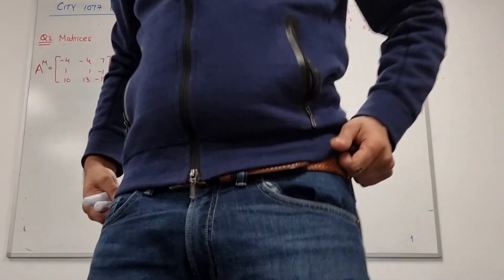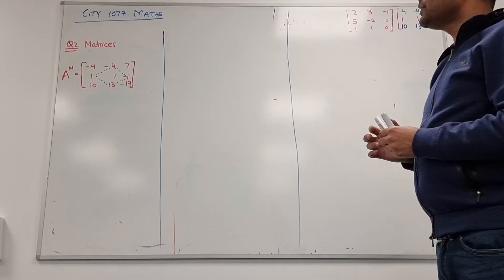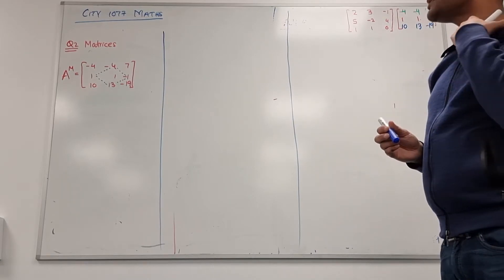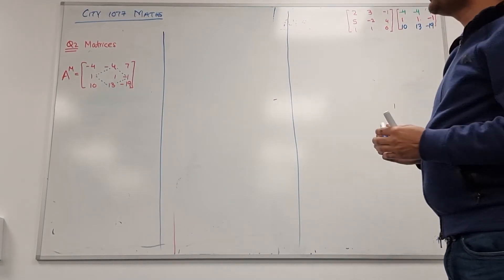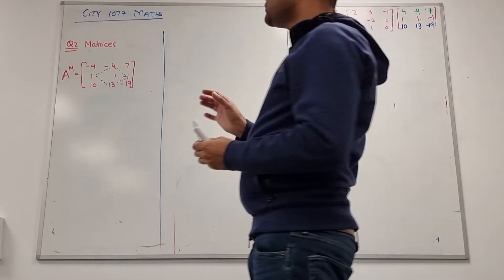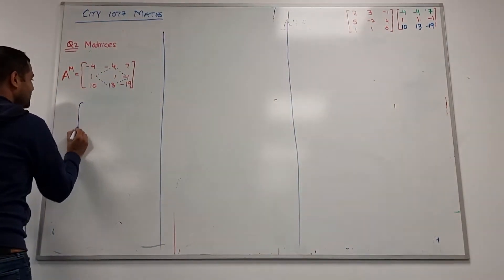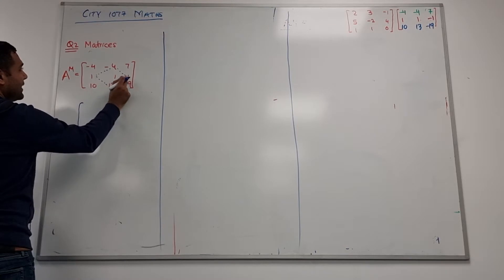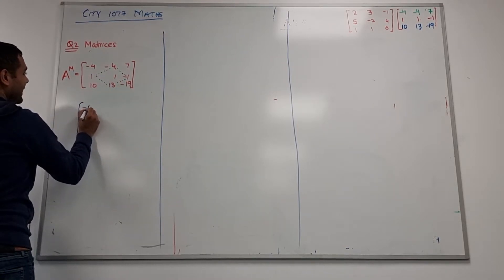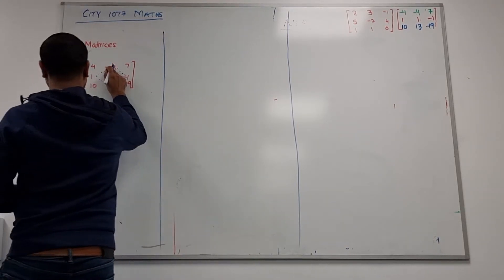So when we got the matrix, the minor of the matrix, what we need to do is we need to change some signs. Usually what I do is I draw a diamond like that one. So minus 4 as it is, this minus 4 I have to change the sign where the diamond is touching. We have to change the sign, so that becomes a positive 4.